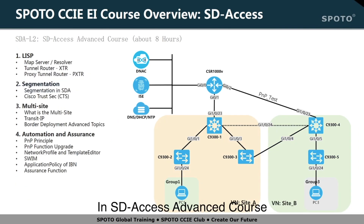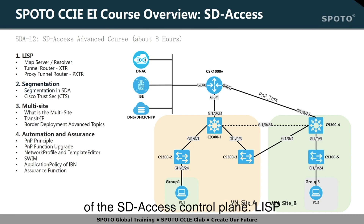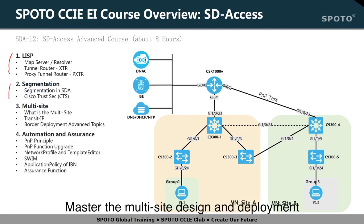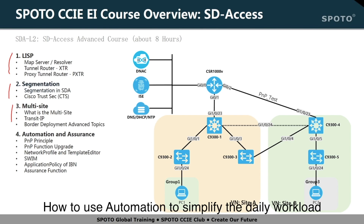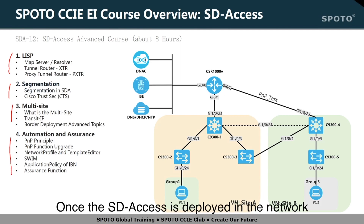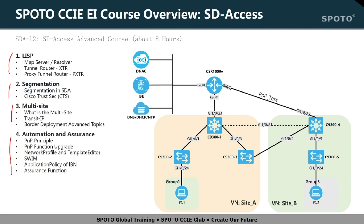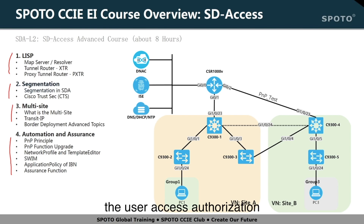In the SD-Access advanced course, we will spend about 8 hours teaching an in-depth explanation of the working protocol of the SD-Access control plane LISP, how to use SD-Access control plane LISP segmentation technology, multi-site design and deployment, how to use automation to simplify daily workload, and how to use assurance to manage the network. Once SD-Access is deployed, regardless of which switch the end user is onboarded to, we no longer need to worry about which VLAN a user belongs to or which IP should be assigned. Regardless of how the user moves within the campus network, the user access authorization will always follow the user's identity, which is managed according to the user group.